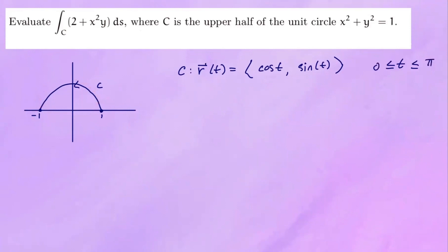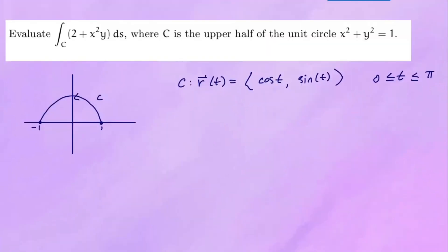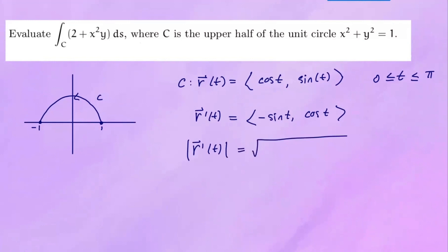Next, we find the derivative of R of T: the derivative of cosine T is negative sine T, and the derivative of sine T is cosine T. Then we compute the magnitude of R prime of T: the square root of negative sine squared T plus cosine squared T, which equals the square root of sine squared T plus cosine squared T. By the Pythagorean trig identity, this equals the square root of 1, which is 1.